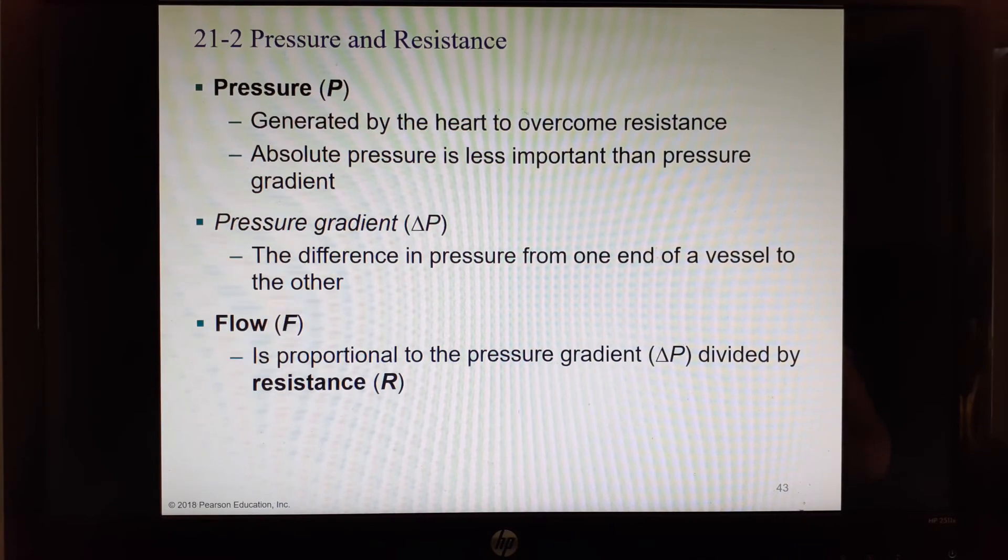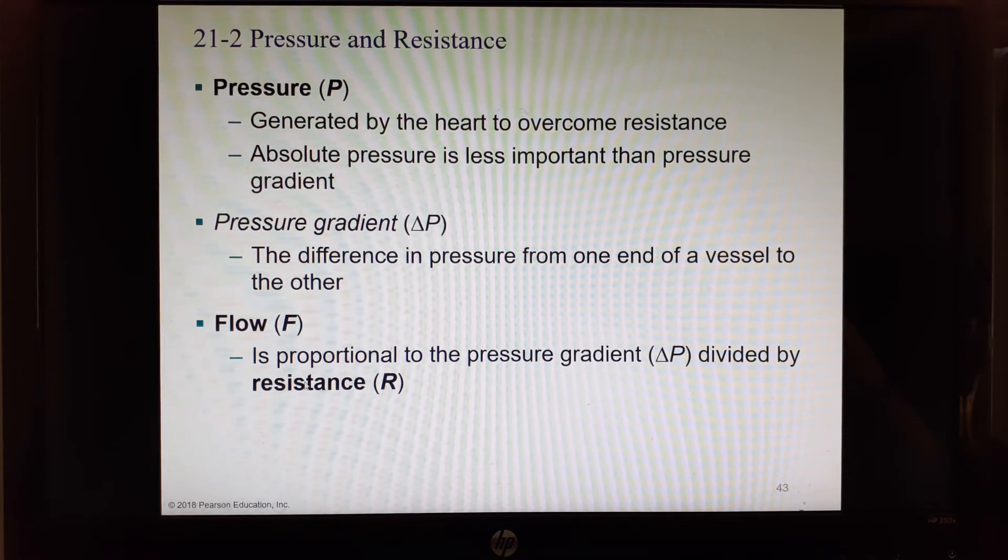Blood pressure is generated by the heart to overcome the resistance. Absolute pressure is less important than the pressure gradient. That means, just like everything else, we go from an area of higher pressure to lower pressure. That is our pressure gradient, the changes in pressure. Flow is proportional to the pressure gradient divided by the resistance.